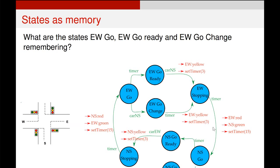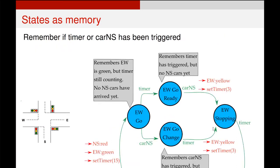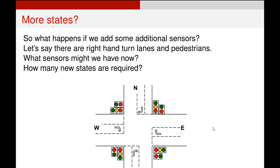Just to be clear, this example of using the Mealy finite state machine — those 'ready' and 'change' states we put in — they are remembering what factors have appeared in the past. They are acting as memory. This is specifically what each of those states is saying about the past situation of the controller. But what happens if we add additional sensors? This might in turn add additional states.